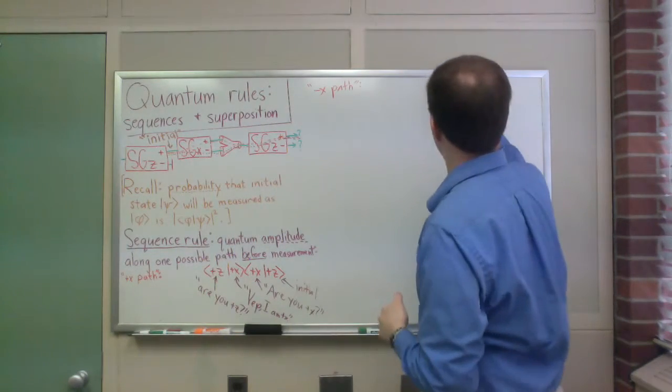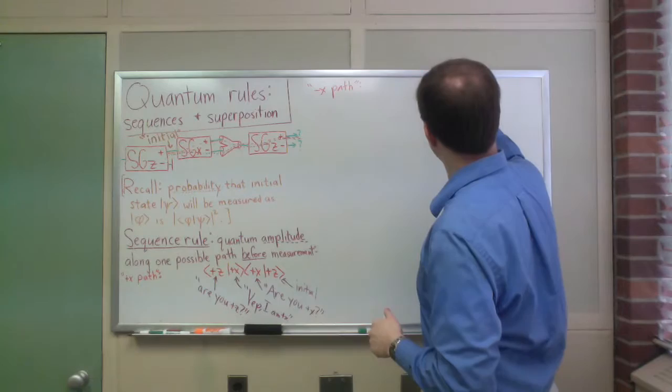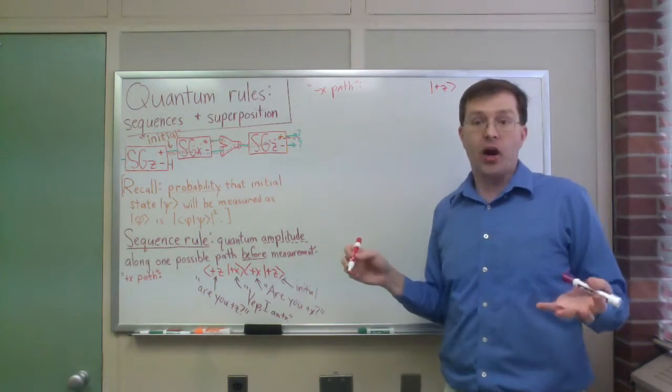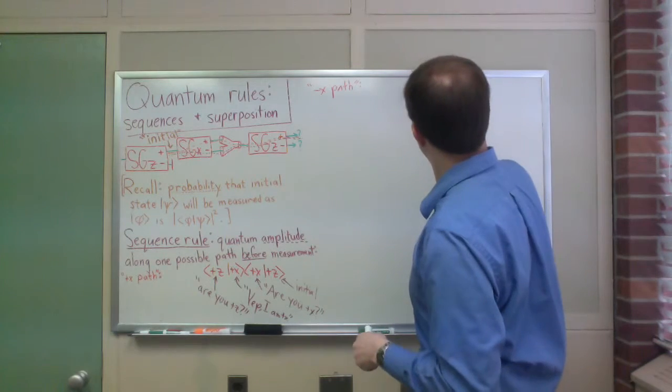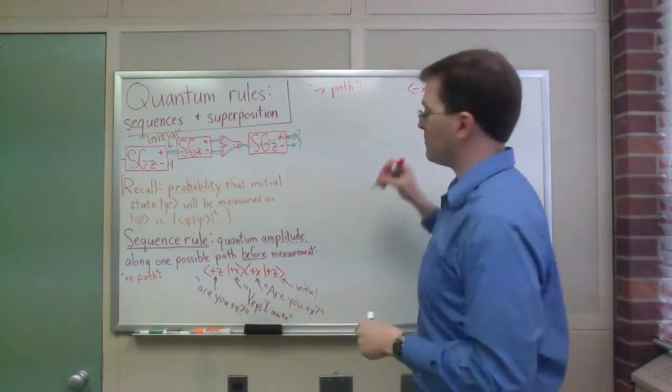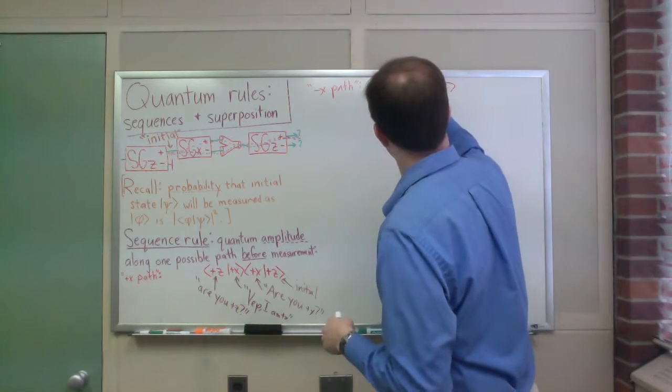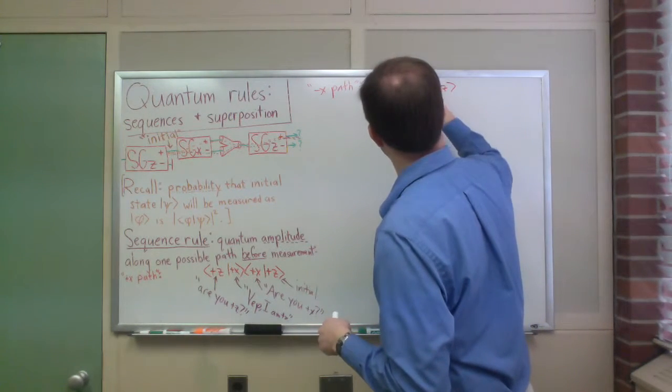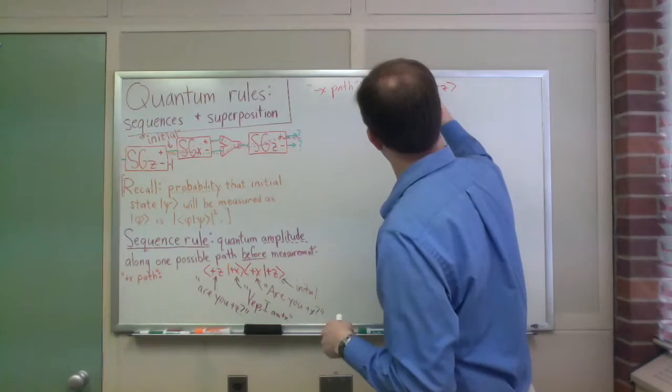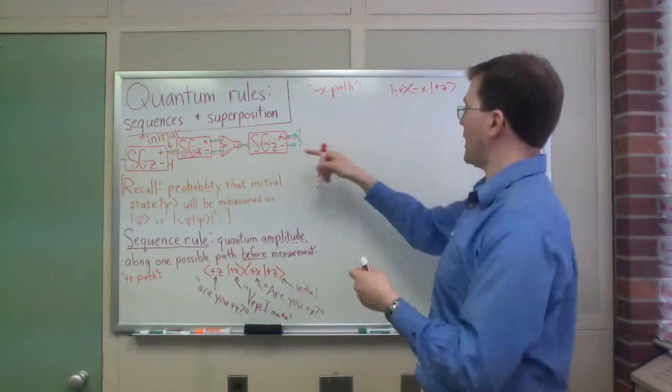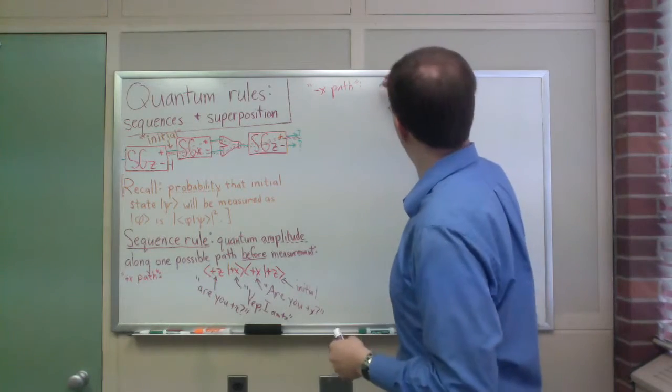For the minus x path, I do the same thing. I say, okay, I start in the plus z state, I ask, hey, are you minus x? Since I'm on that path, yep, I am. So I'm in the minus x state now. That's my ket for minus x now. And then I say, well, are you plus z now at that point?